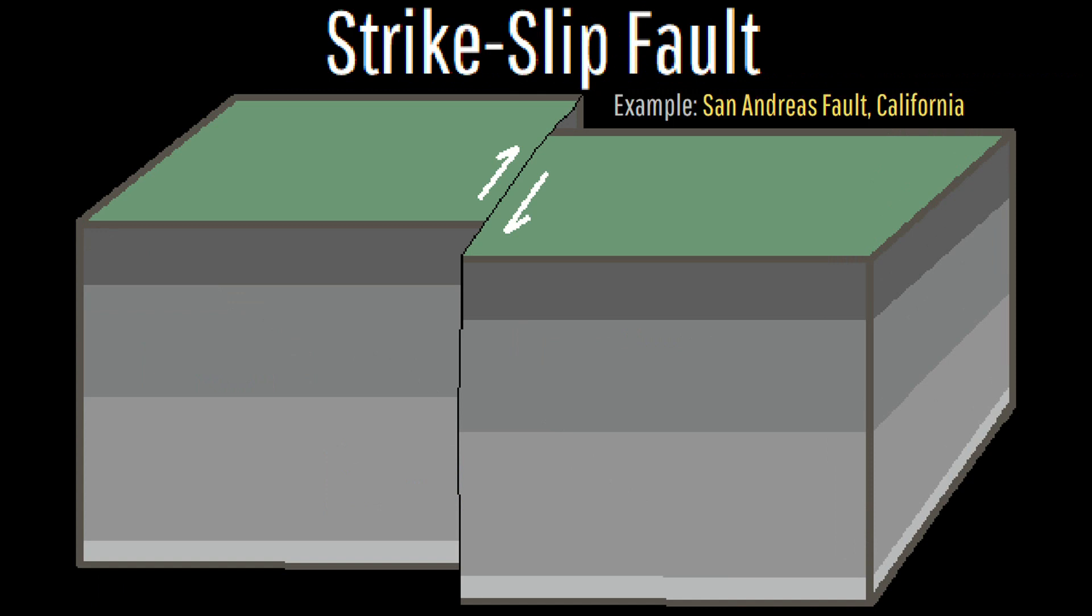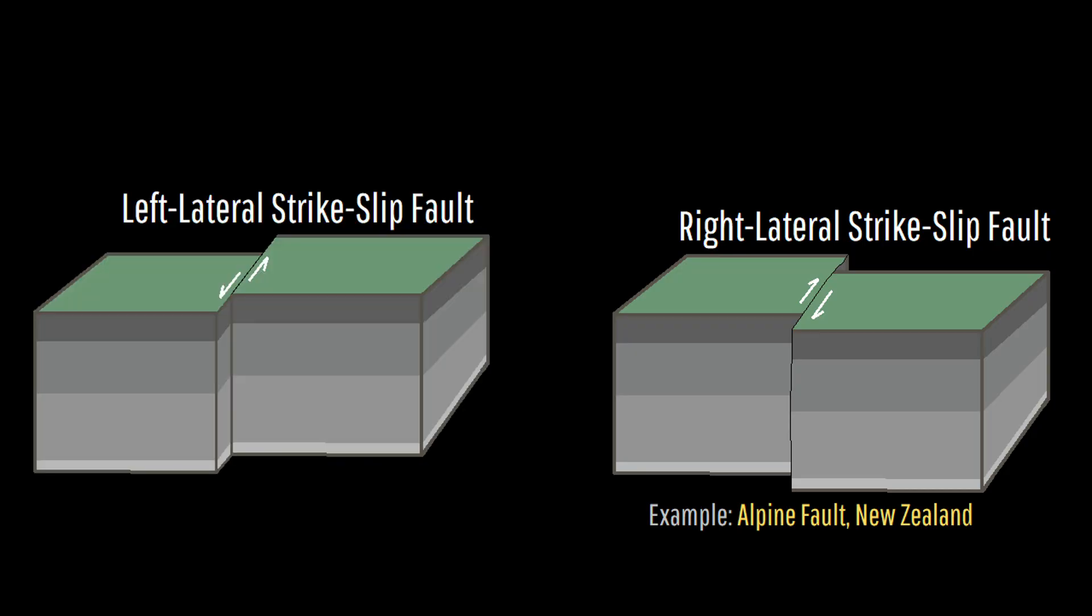Strike slip faults involve primarily horizontal instead of vertical motion. When viewing along the axis of a strike slip fault, if the right hand side is moving towards you, it is a right lateral strike slip fault, but if the left side is moving towards you, it is a left lateral strike slip fault.